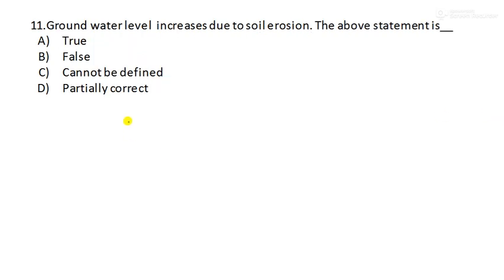Next is question number 11. Groundwater level increases due to soil erosion. The above statement is true or false. So soil erosion, does it help to improve the water level, groundwater level? No. It not increases. Actually it decreases the soil erosion as well as the fertility of soil. So the above statement is false. Option number B is the right choice.